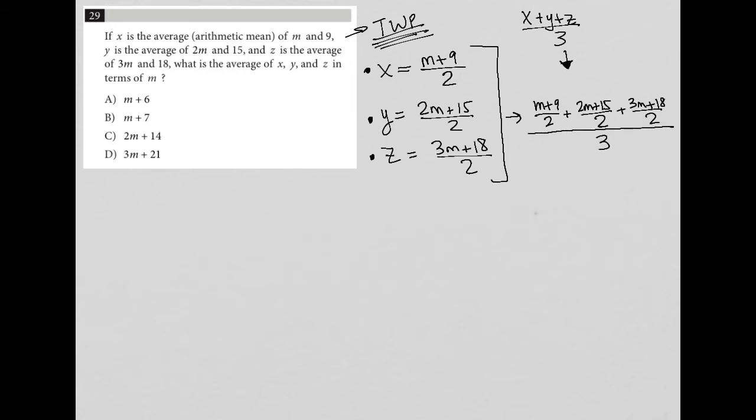So if you simplify this, what you'll see is that all the fractions in the numerator have a common denominator of 2, which means I can just combine those fractions together. The numerators have like terms: m, 2m, 3m, 9, 15, 18. If I combine all of those three fractions together, given they have a common denominator,